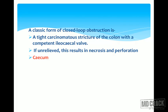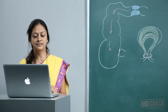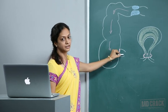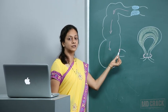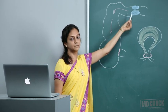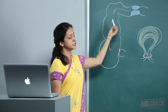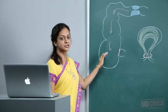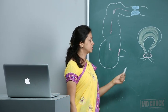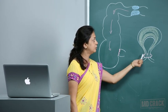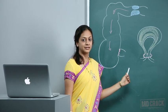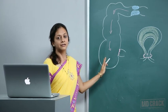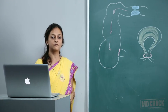A classic form of closed loop obstruction is a tight carcinomatous stricture of the colon with a competent ileocecal valve. If unrelieved, this results in necrosis and perforation at the cecum. As seen in the diagram, if the ileocecal valve is competent and there is a carcinomatous stricture at the transverse colon, back pressure rises, the cecum becomes distended, and finally perforation results in the cecum. Another example of closed loop obstruction is a herniated loop, where gas and fluid accumulate and perforation can occur. Hernia and the cecum are the two classic examples of closed loop obstruction.